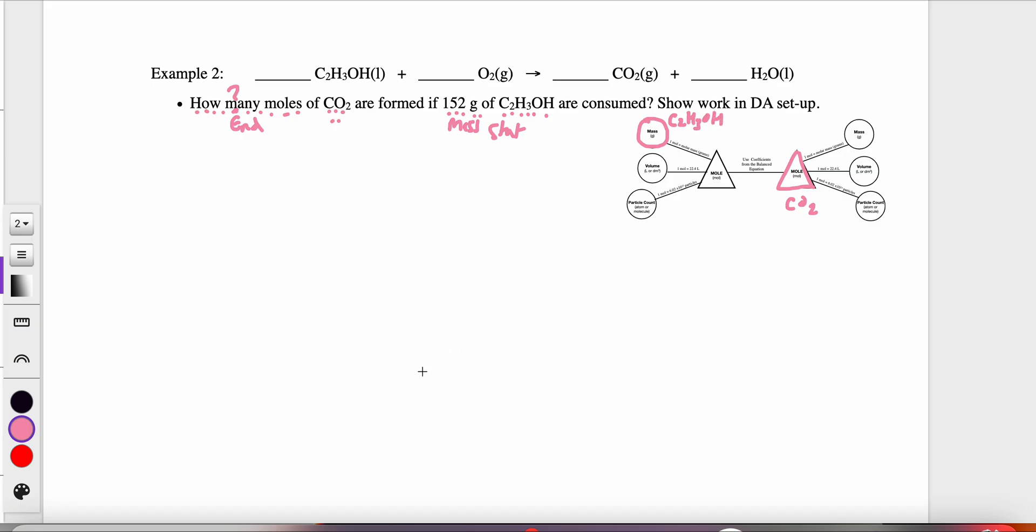So now I have to think through the process of how do I start with the mass of one substance and get all the way to the moles of a different substance. I'm going to follow the pathway here. I'm going to change the mass of the C2H3OH, and the only thing I can change it into would be moles. And because it's on the same side, I'm going to change mass of C2H3OH into moles of C2H3OH.